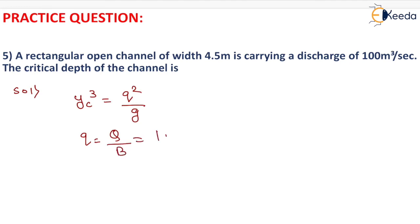On putting the value, that is 100 by 4.5, it will be equals to 22.22 meter square per second.